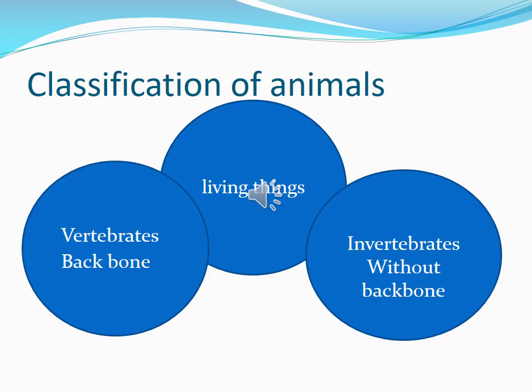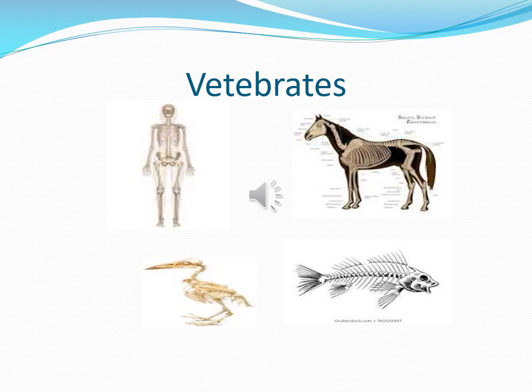Vertebrates are animals with a backbone, and invertebrates are animals without a backbone. We human beings do have a backbone — does that make us a vertebrate? I want you to think over it. Here is a picture of a few vertebrates to help you understand the term vertebrate better. The key concept of a vertebrate is that it has a backbone. Place your hand over your backbone and feel it. You should always take care of your backbone — it's a very fragile area of your body.